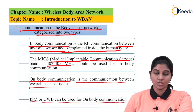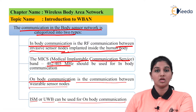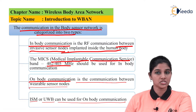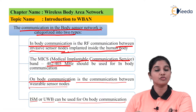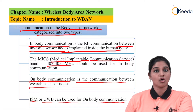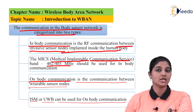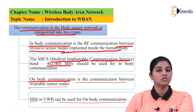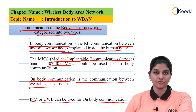ISM or UWB (ultra wideband) communication can be used for on-body communication. The ISM band is used for industrial, scientific, and medical applications. It is a license-free band having a range of 2.4 to 2.485 GHz. Many electronic applications operate on this band since it does not require a special permission or license. Electronic equipment including microwave ovens and cordless phones also operate on the same frequency.